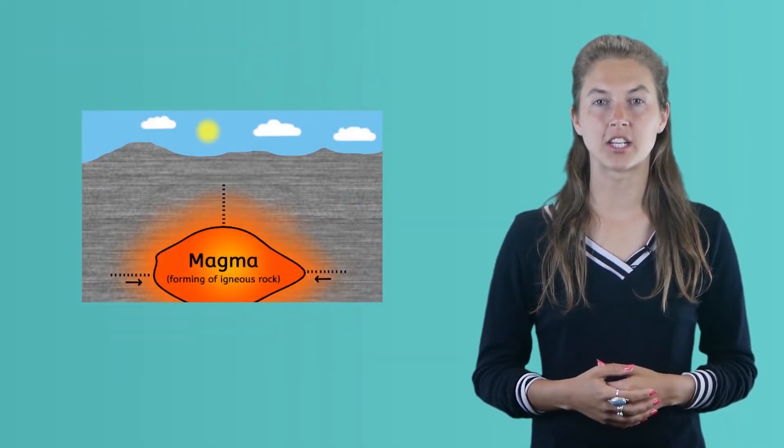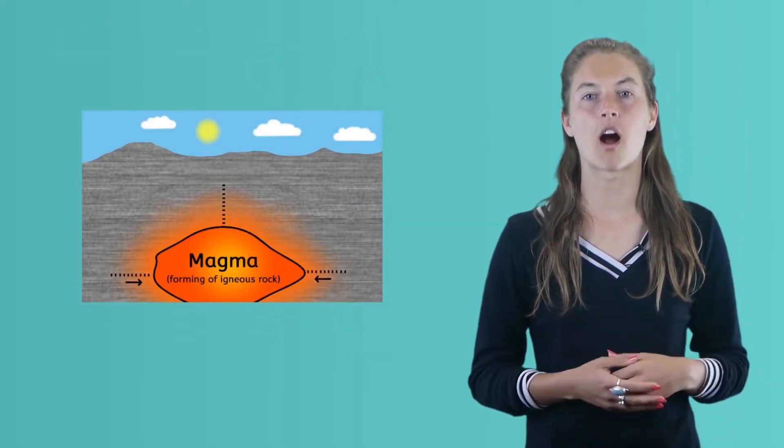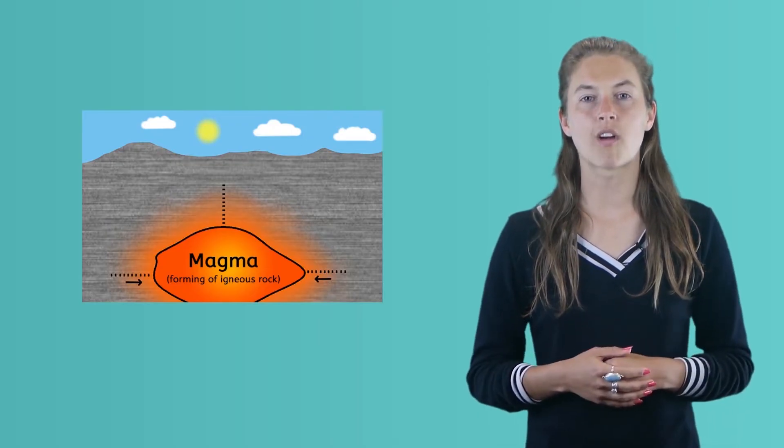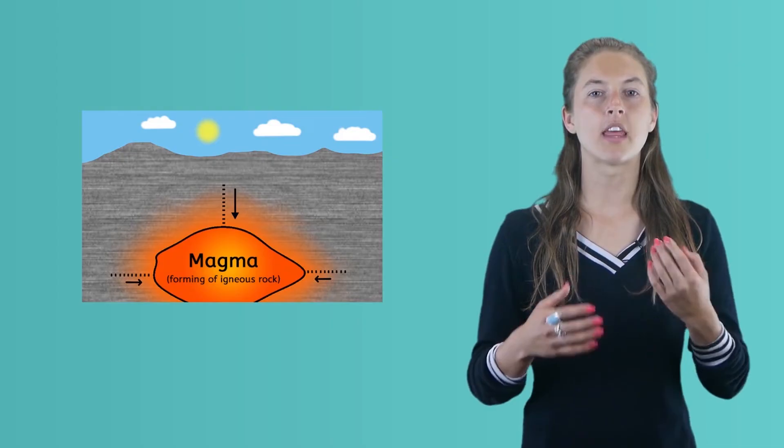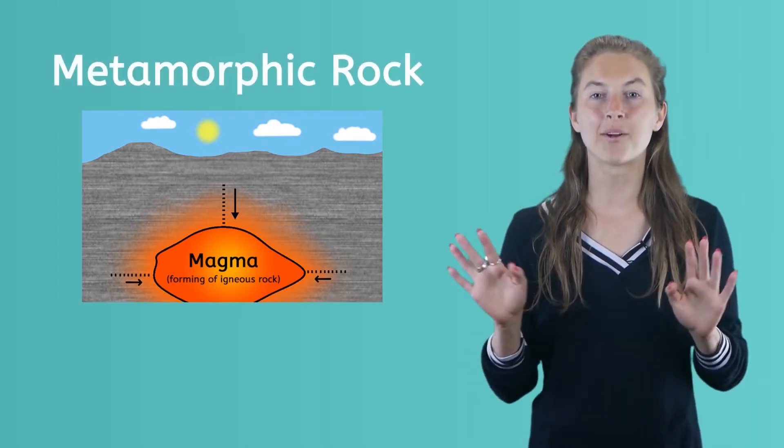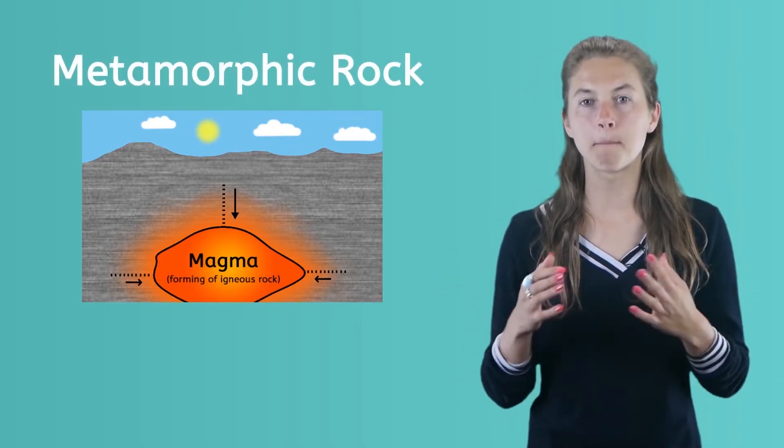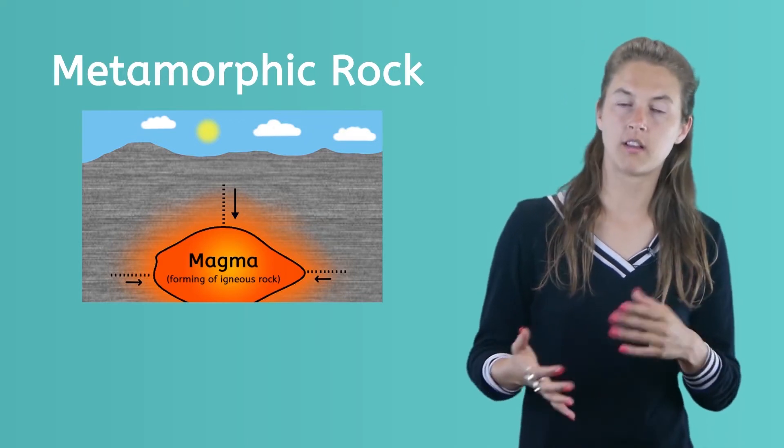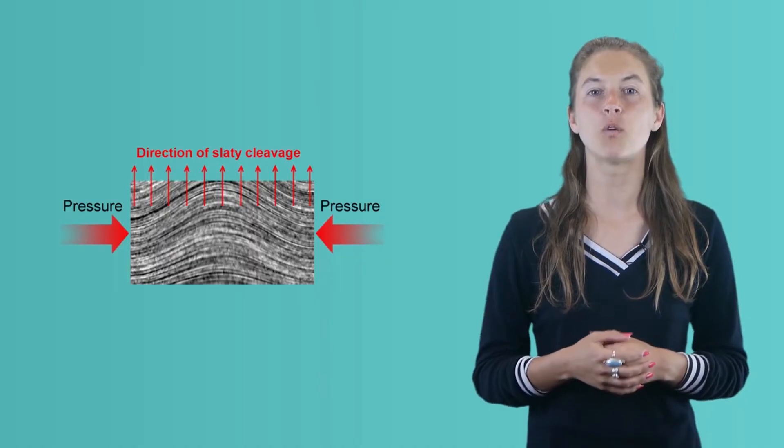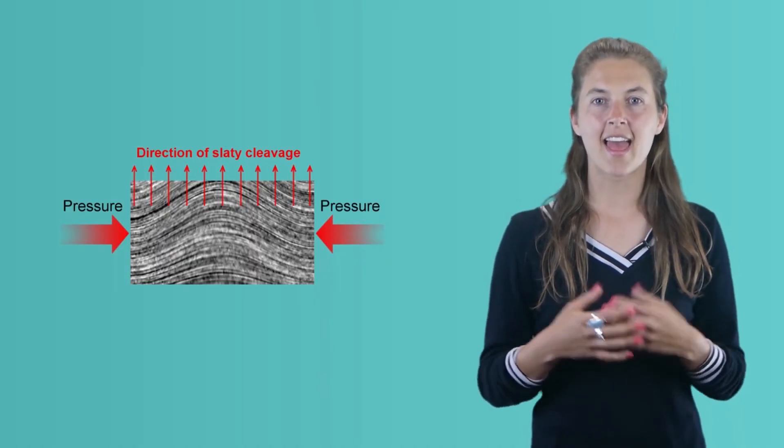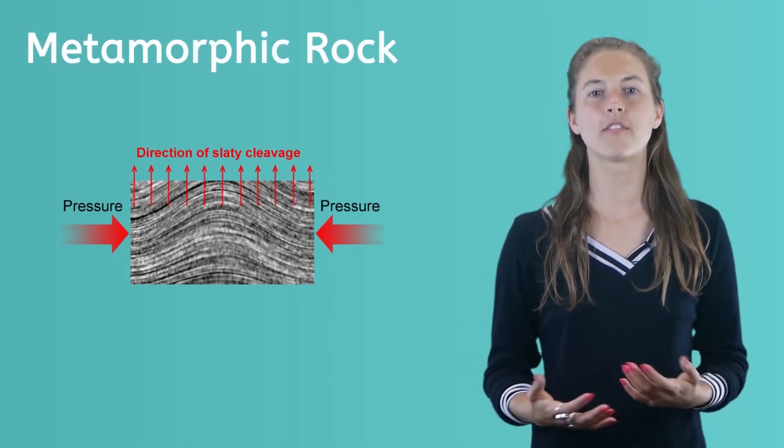Heat and pressure together change igneous and sedimentary rocks. When the minerals in these rocks change over time by heating without fully melting the rocks, they form new rocks called metamorphic rocks. In other words, the minerals change or morph. If there is enough heat or pressure, rocks can actually be folded and squeezed together, and then they harden into metamorphic rocks.